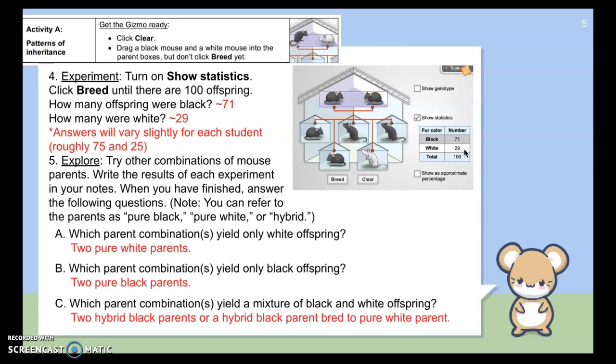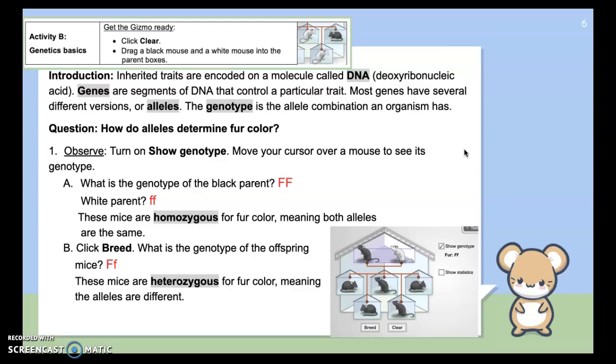And so number five says explore. Try other combinations of mouse parents. Write the results of each experiment in your notes. When you have finished, answer the following questions. Note you can refer to parents as pure black, meaning they have two of the same alleles. Pure white, they have two of the same alleles for white color. Or hybrid, meaning they have an allele for the black color and the allele for the white color. So question A, which parent combinations only yield white offspring? If you have two pure white parents, as we saw in the beginning of this lab. Which parent combinations yielded only black? Again, you had to have two pure mice. So two black parents. Letter C says, which parent combinations yield a mixture? That's when you have hybrid parents. Hybrid, remember, means you have one dominant allele and one recessive allele. So you have one of each. And then you don't know which one is going to get passed down. So you have a few different combinations that could result.